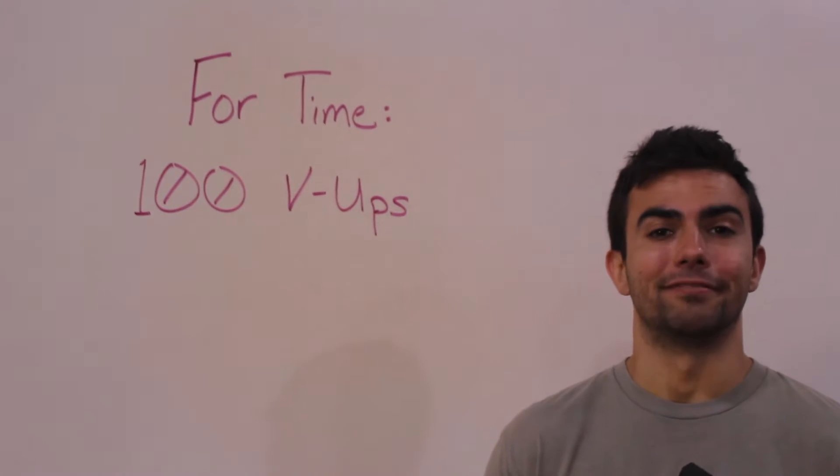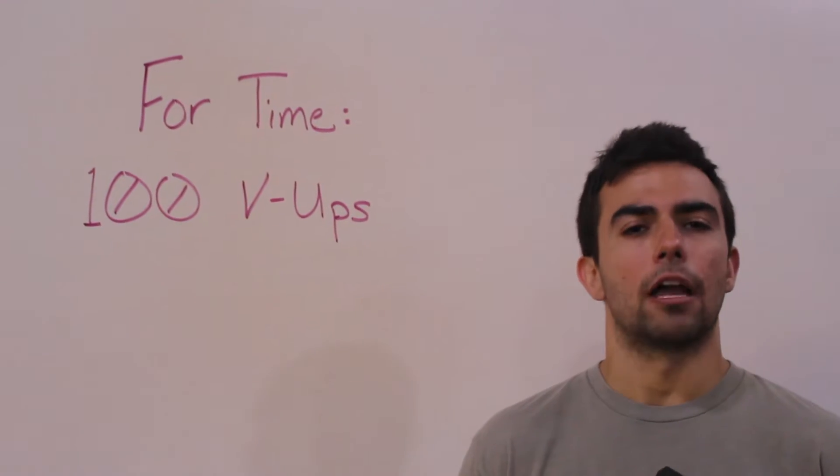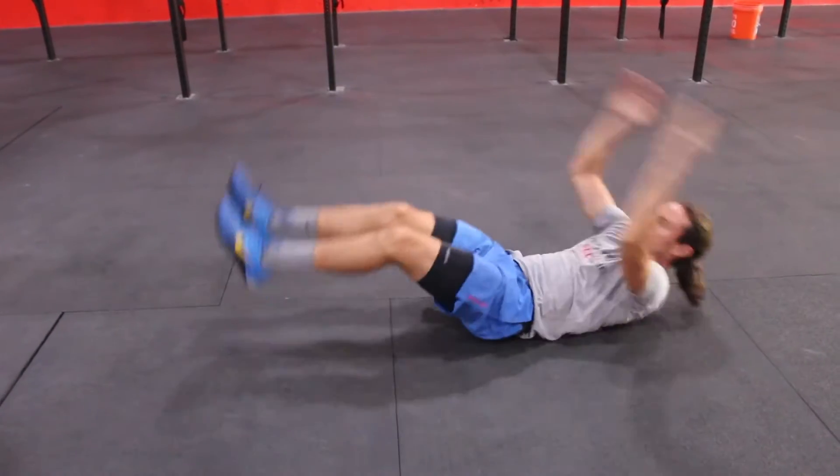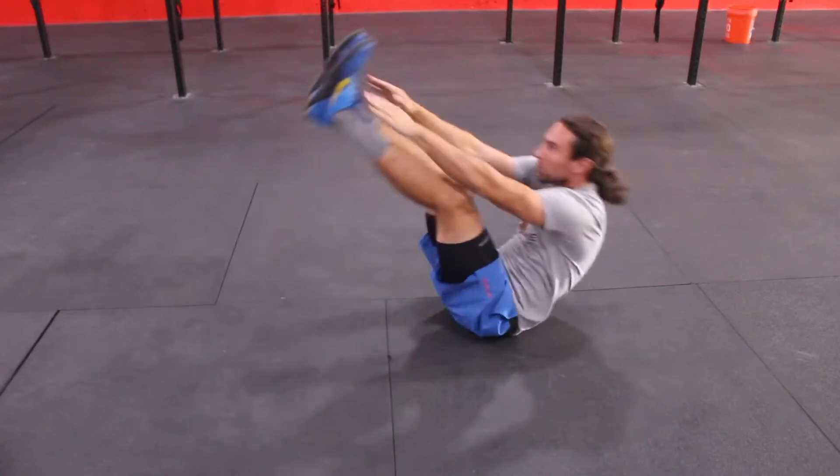Simple, yet very effective. On the V-Ups, reach back behind your head and touch the floor, and then your goal is to crunch up and attack the toes.